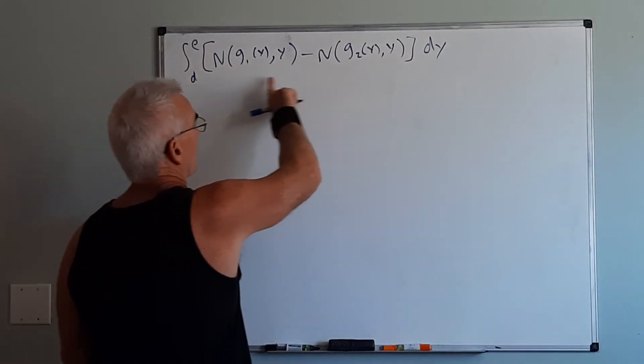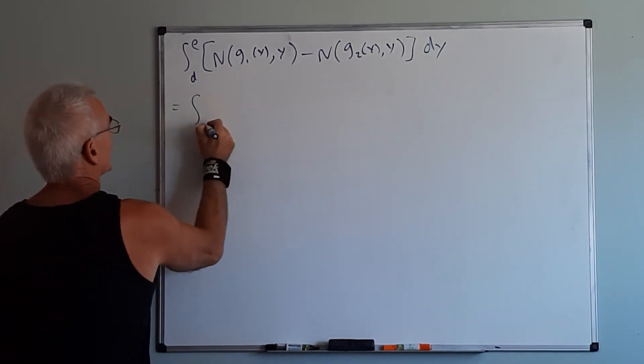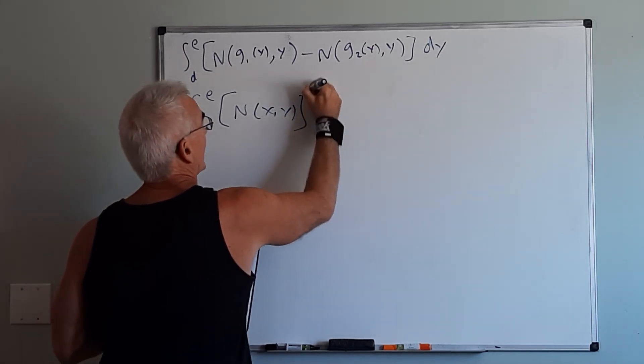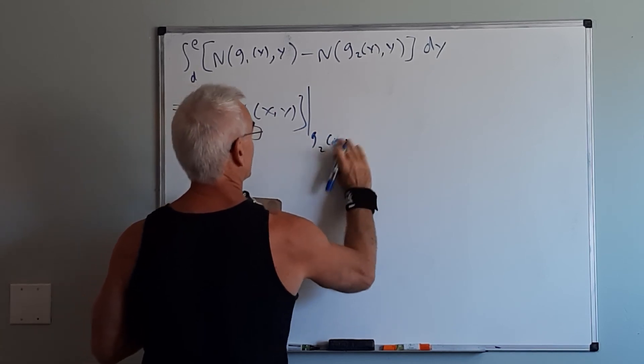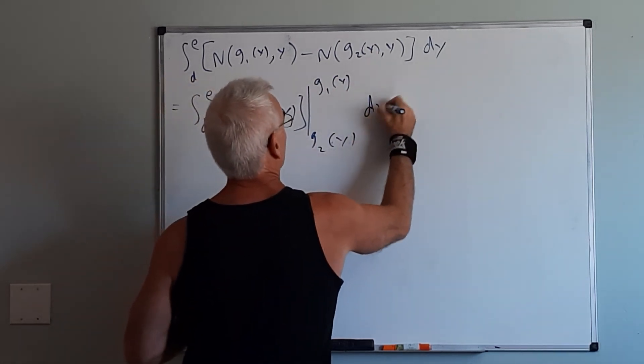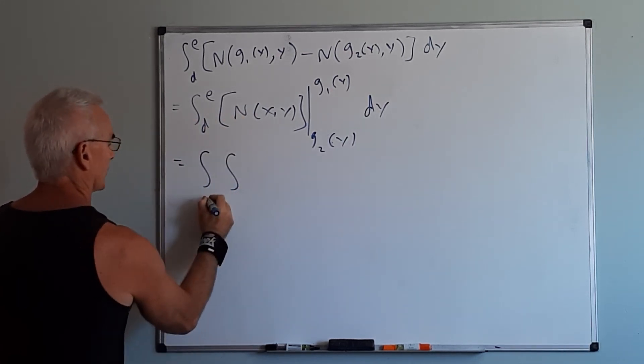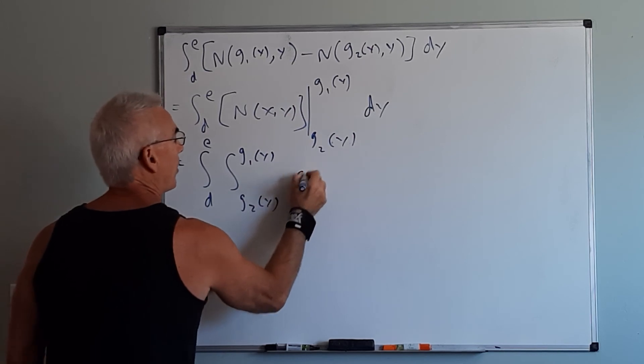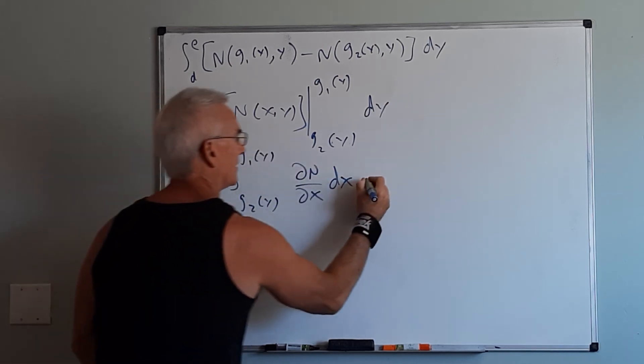Now continuing just like before this looks like it could be the antiderivative of something, namely the integral from d to e of n of x,y evaluated from g2 of y to g1 of y. And then looking at that just like before this would have been the double integral from d to e, g2 of y to g1 of y and then the partial of n with respect to x dx. That would produce this dy.